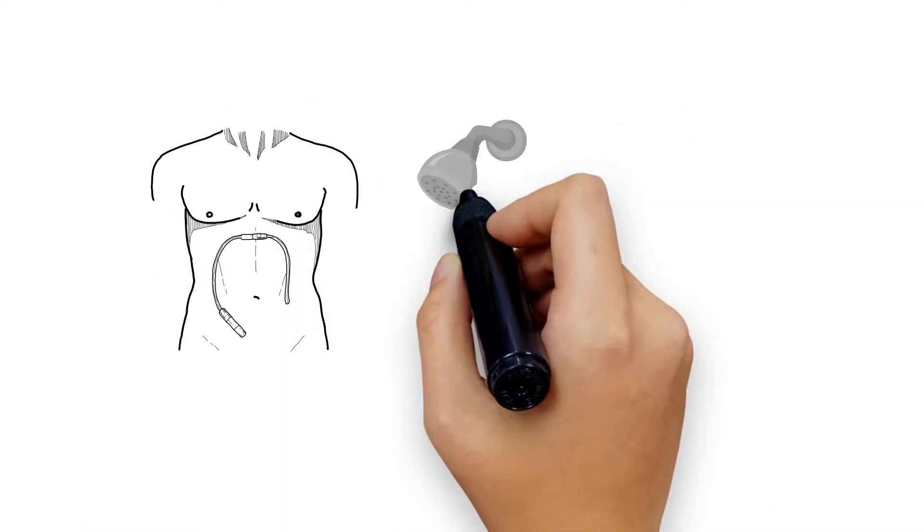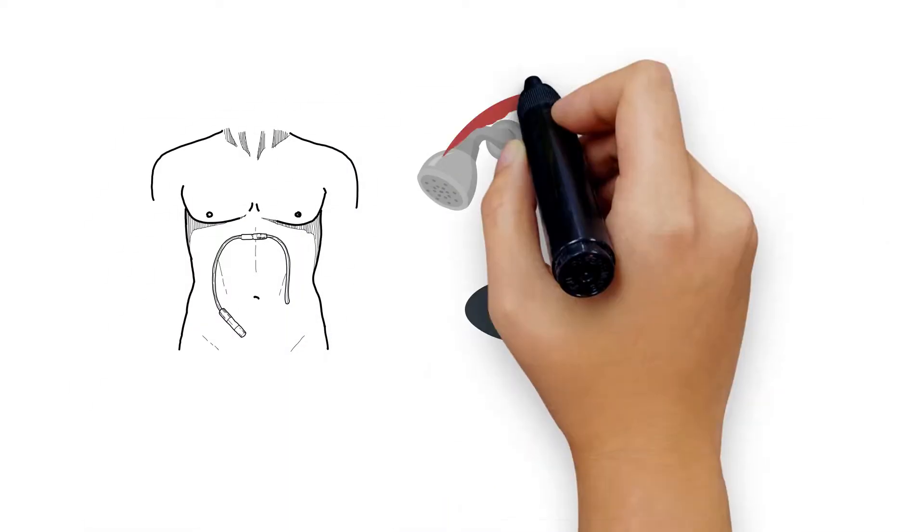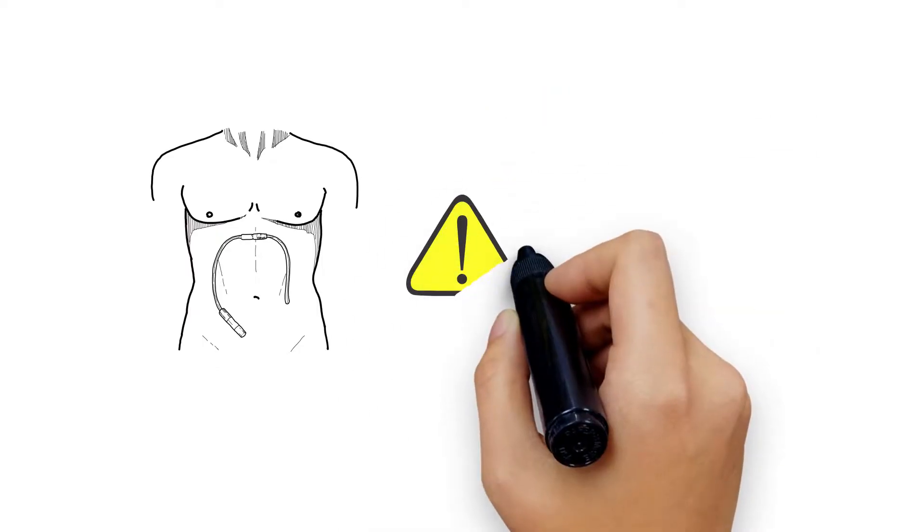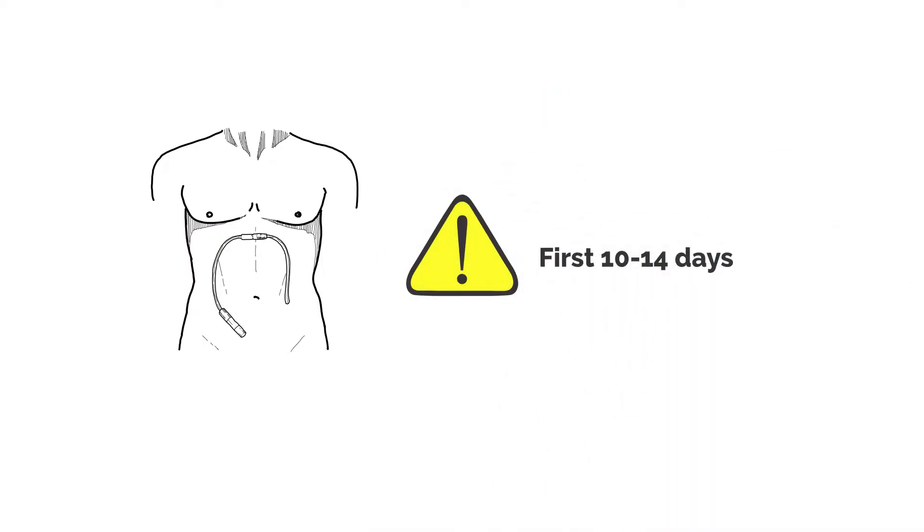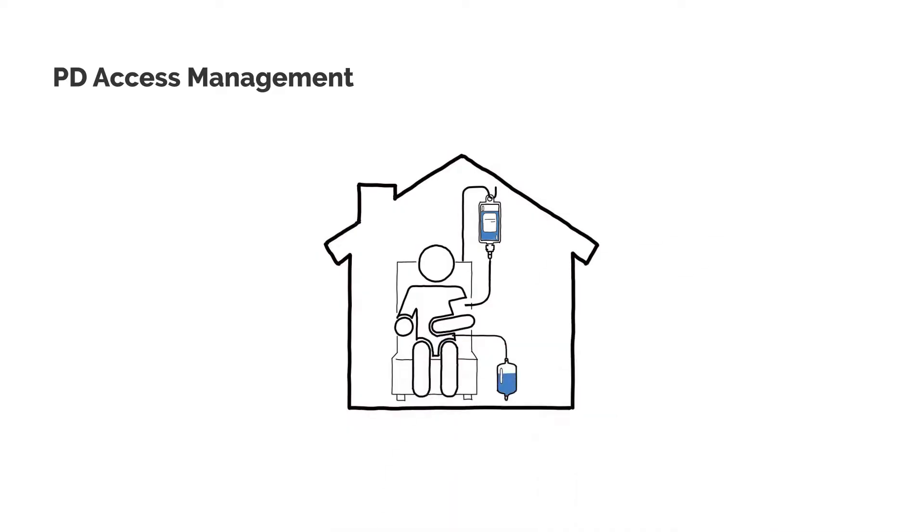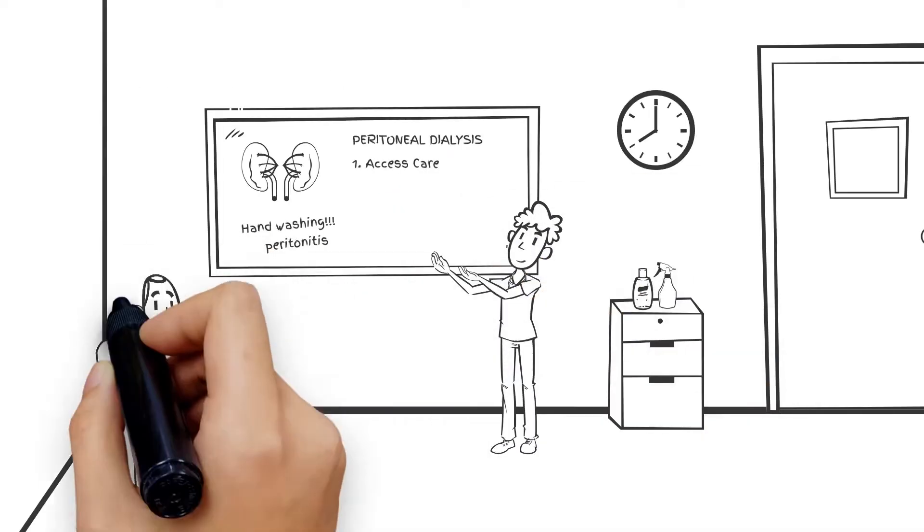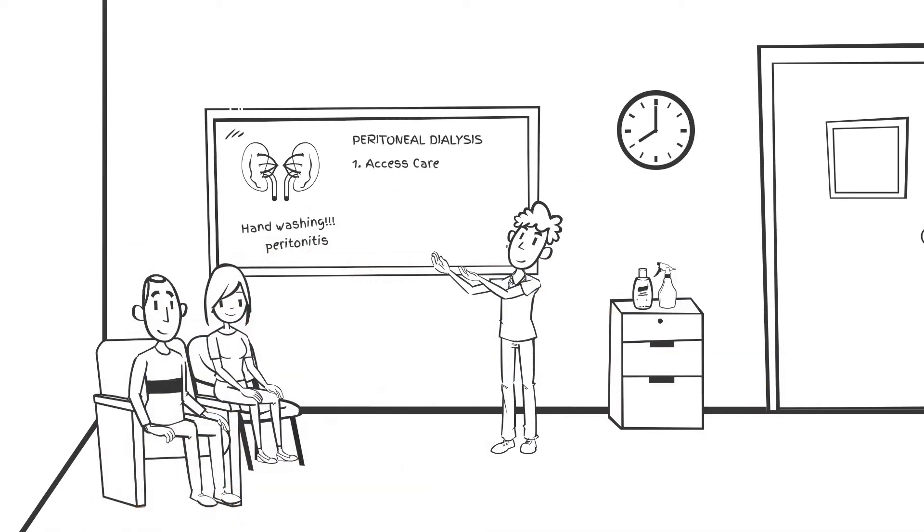It's important to keep the catheter clean and dry, especially in the first 10 to 14 days. PD is typically done at home, so patients and caregivers are trained on how to maintain the catheter.